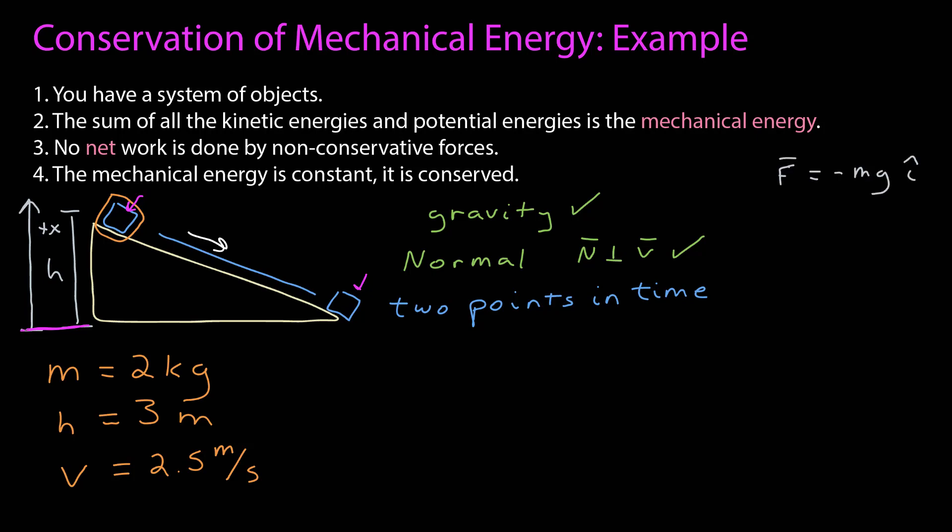Now I need to find the functional form of the potential energy. That starts with the force due to gravity. It points along the x-axis, it has a magnitude of mg, and it points in the negative x direction. Now I'm going to extract just the components for that, so I have the force is equal to minus mg. Now I want to find the negative antiderivative of that, which is positive mgx plus some additive constant.